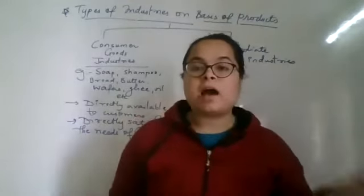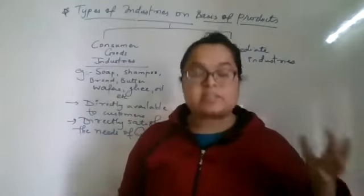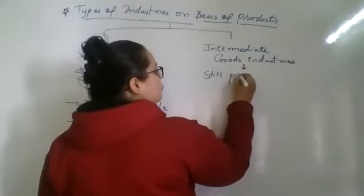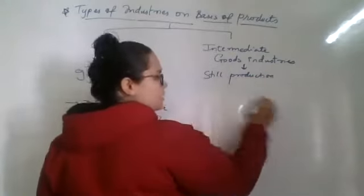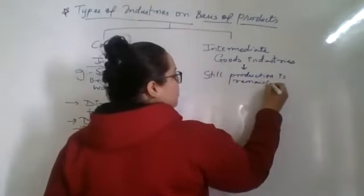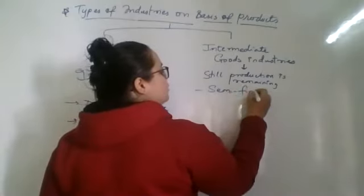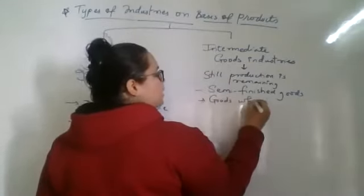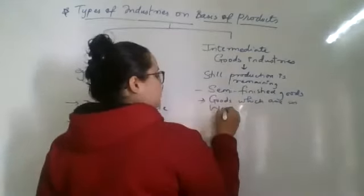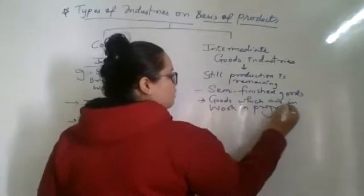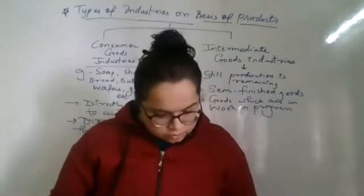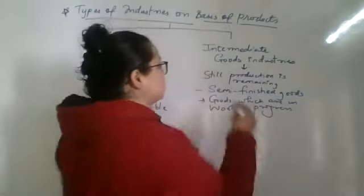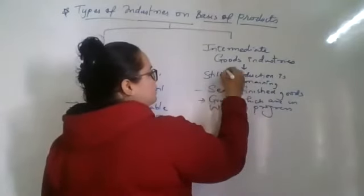Now intermediate goods — production is not yet complete here. We can say semi-finished goods, or goods which are work in progress. Abhi tak karigari kaam karna baqi hai. So these are the types of goods which are semi-processed in nature and still one stage of production is remaining.